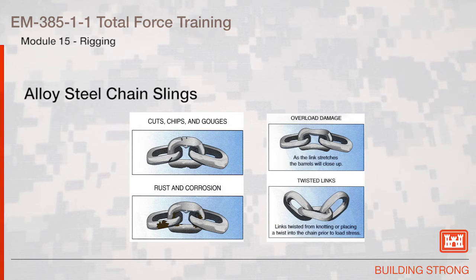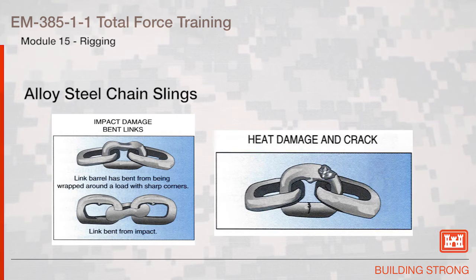This slide illustrates damage that can be observed in alloy steel chain slings: cuts, chips, and gouges; overload damage, where typically the link stretches and the barrels will close up; rust and corrosion; twisted links from knotting or placing a twist in the chain prior to load stress; impact damage or bent links where the link barrel has been bent from being wrapped around a load with sharp corners or bent from impact damage; and heat damage and cracks.